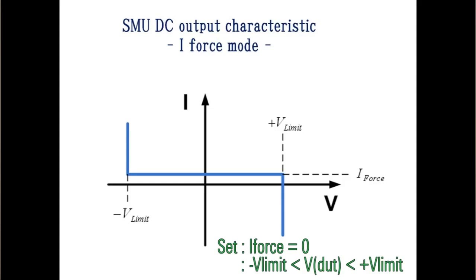By setting force current value to 0 amp and setting plus and minus V limit to cover voltage range you want to measure, you can measure voltage of the DUT with high input resistance condition.